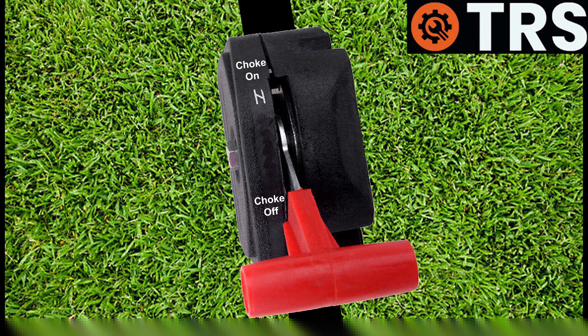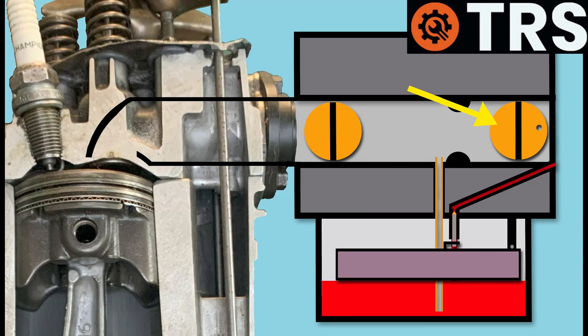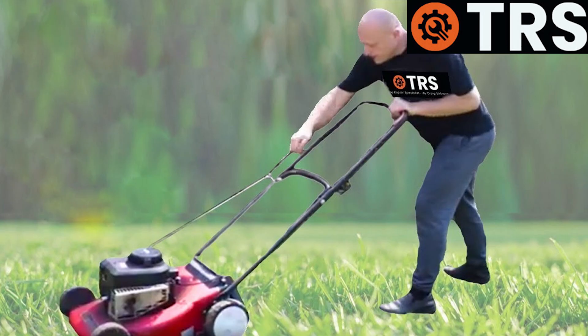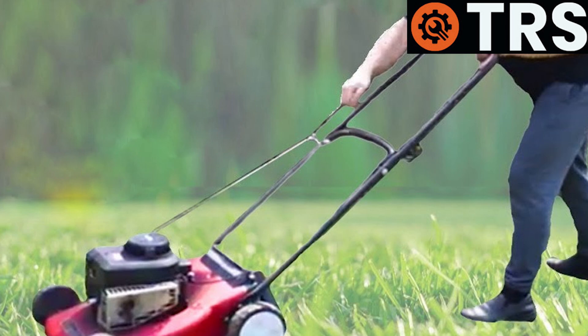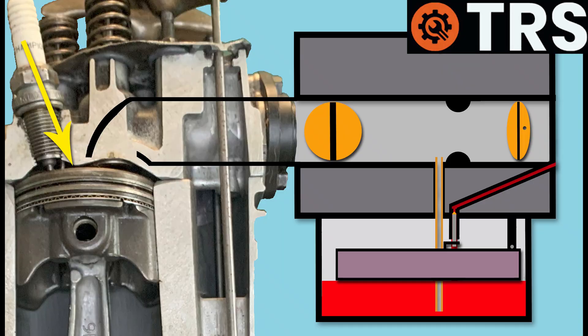The operator reached down and activated the choke, or the cold start. That then activated this choke plate and closed it. Then, when the operator pulled the starter pull cord, this turned the engine's crankshaft and caused the piston to lower.